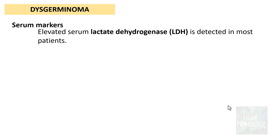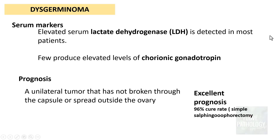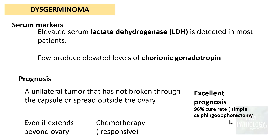For serum markers, these patients might have elevated serum lactate dehydrogenase, and some also produce elevated levels of beta-hCG (chorionic gonadotropin). Regarding prognosis: if the tumor is unilateral — as it most often is — and has not broken through the capsule or spread beyond the ovary, it has an excellent prognosis with a 96% cure rate with simple salpingo-oophorectomy. But if the tumor extends beyond the ovary, it is still favorable because it responds well to chemotherapy.